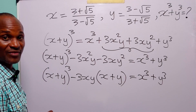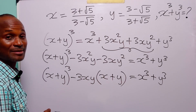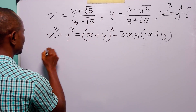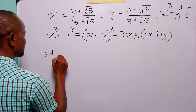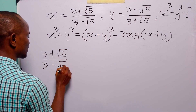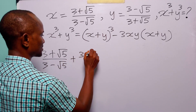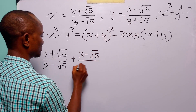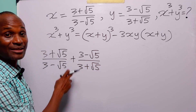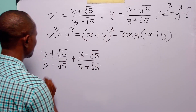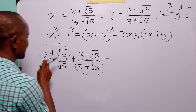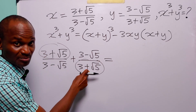Now we are going to go on and find the value of x plus y and x times y. Let us add x and y. We have 3 plus root 5 over 3 minus root 5, plus 3 minus root 5 over 3 plus root 5. There is a very simple way of adding these fractions — we multiply each term by the denominator of the other.